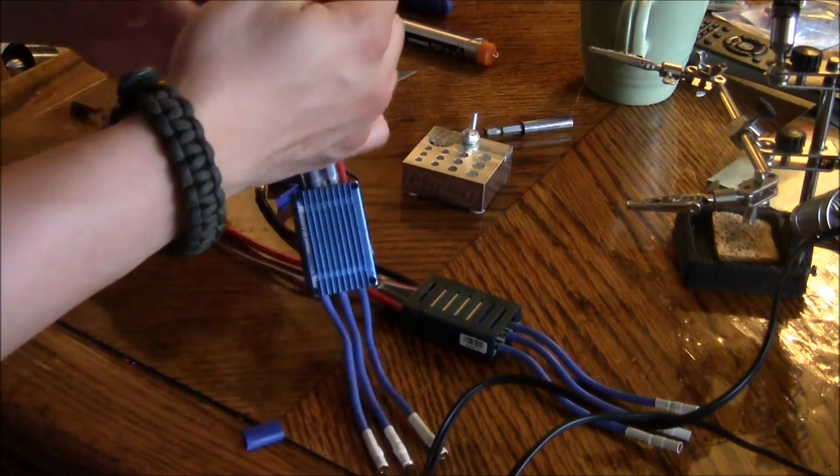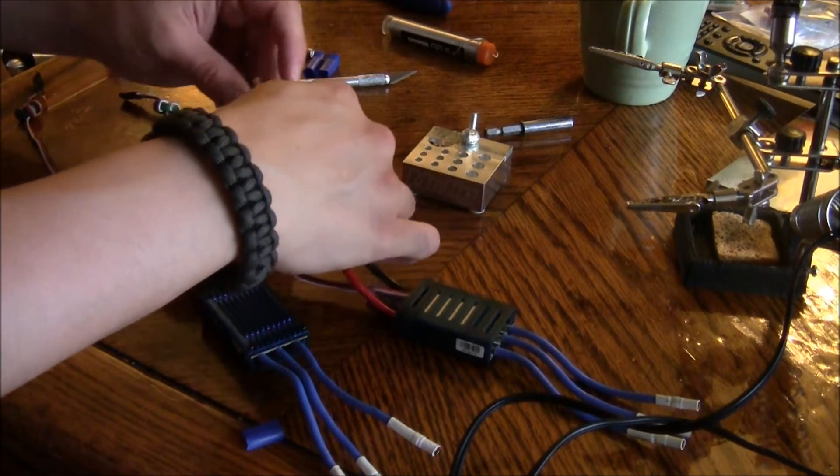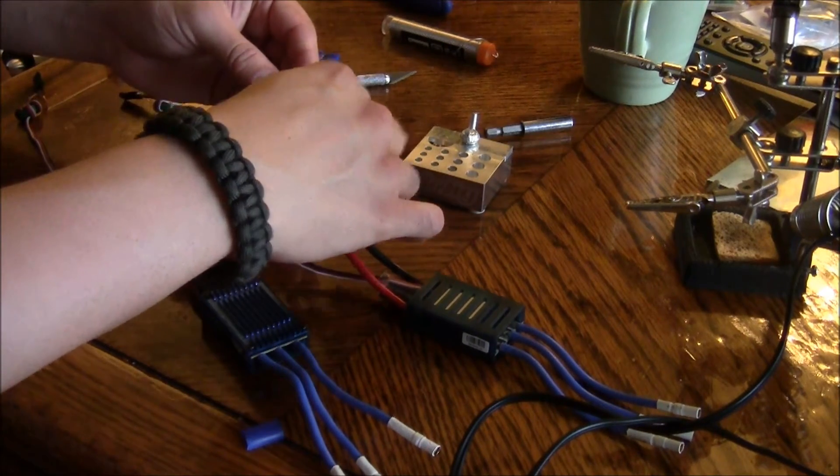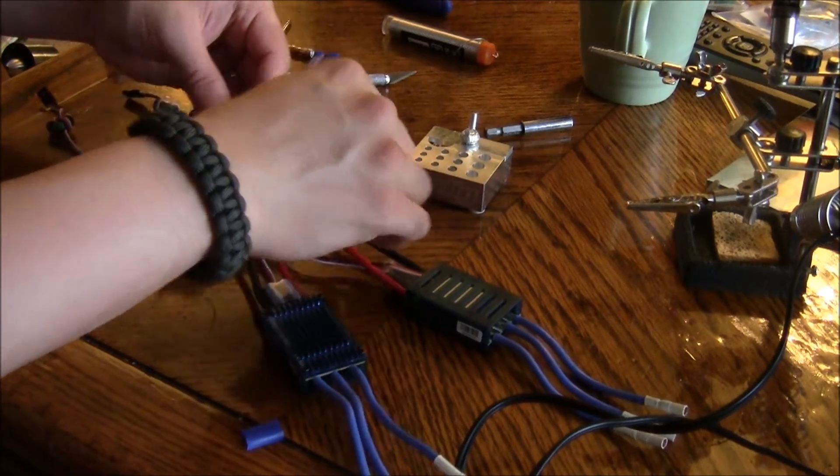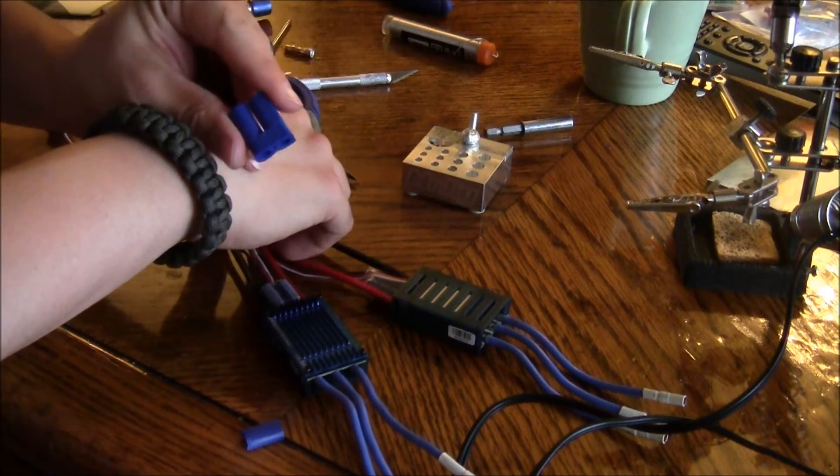I'm also going to separate this Dean connector from this ESC. Then I'm going to solder both the reds together and both the blacks together, and then put it back into this EC5 connector.